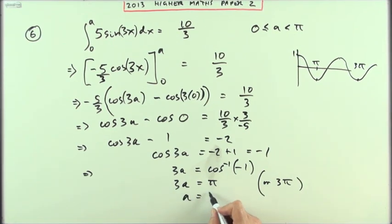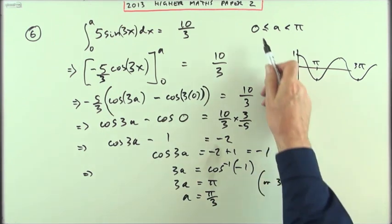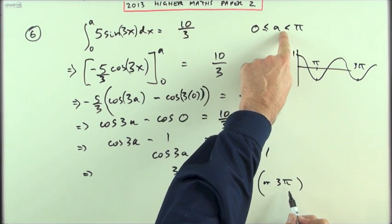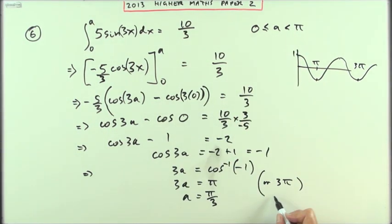When I divide by 3, I've then got pi upon 3, which is fine, it's inside the range. But if I was to divide that by 3, I'd get pi, and pi's not included, because it doesn't have to equal to. So I could have put in bracket, or, or maybe I shouldn't, or just pi, but that's not included. So my answer is a equals pi upon 3 only, since a is less than pi.